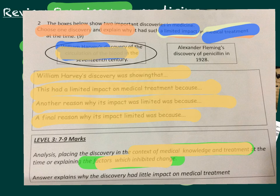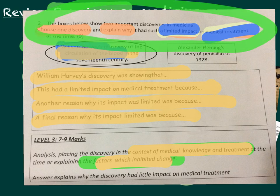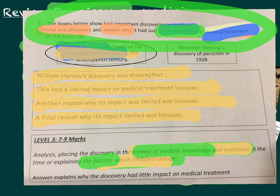The key to getting nine marks out of nine for this type of question is three paragraphs, each focusing on a particular factor or aspect of the context of the time, to explain why the individual or discovery had a limited impact on medicine at the time. Have a go at this question yourself so you can practice using these skills. Good luck with your exam this summer!